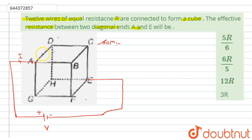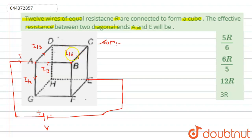After reaching point A, this current will get divided into three parts. So the current flowing through each of these three branches will be i/3. Similarly, the current flow through each branch from this point will be i/3. Now if this current i/3 reaches the next point, it will get divided into two parts: i/6 and i/6.